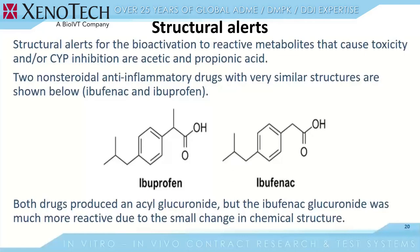Structural alerts for bioactivation to reactive metabolites causing toxicity and/or CYP inhibition are acetic acid and propionic acid moieties. Two NSAIDs with very similar structures — ibuprofen and ibuprofenac — both produce acyl glucuronides, but the ibuprofenac glucuronide was much more reactive due to a small change in chemical structure: lack of substitution at carbon 2 of the acetic acid portion of ibuprofenac. Ibuprofenac was withdrawn from the market in 1968 due to hepatotoxicity, while ibuprofen has been marketed in the US since 1974 and remains a widely used and safe drug.